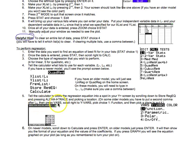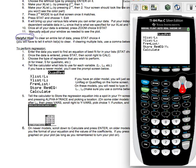Scroll right to Y vars, choose function, and then you'll be able to pick a Y equals place. So on the newer models, you scroll down to calculate and press enter. On the older ones, you can just go ahead and press enter now.